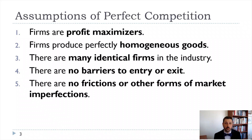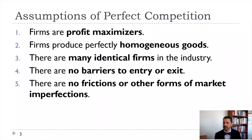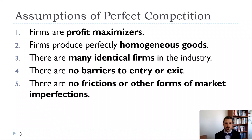We also assume there are many identical firms, which requires them to have the same cost structure. It's important that there are many firms because we assume no firm has any pricing power — something we'll definitely relax later. Thinking about late 19th century capitalism, firms realized that perfect competition was bad for their profit line, so they got bigger and bigger and built up trusts. That's really where our first antitrust policies came from.